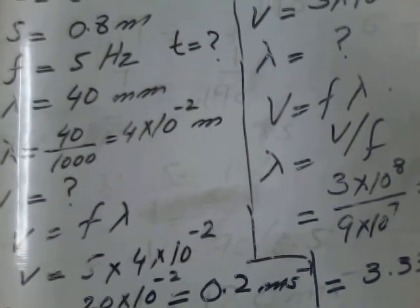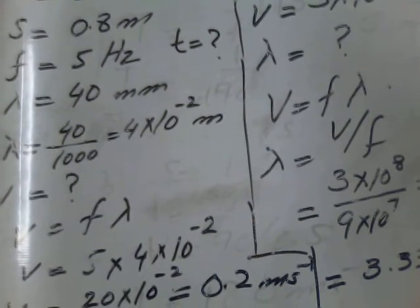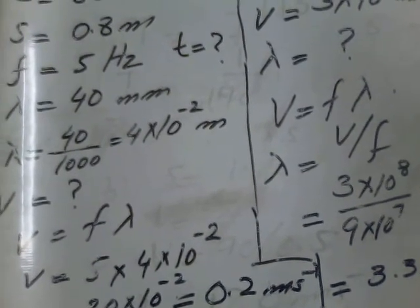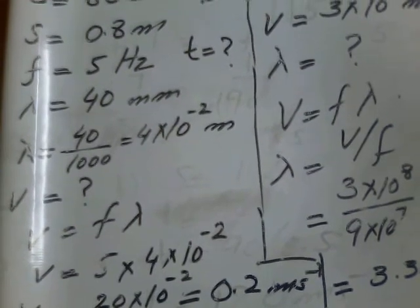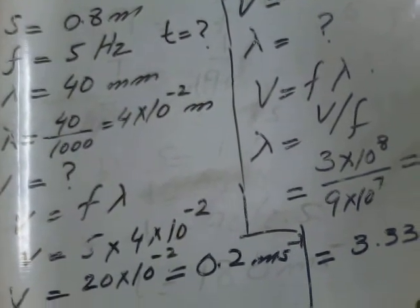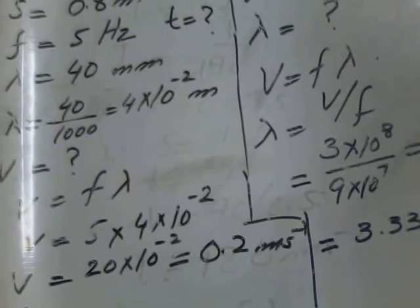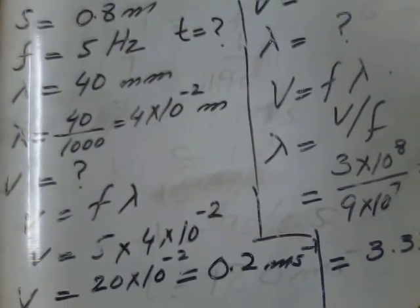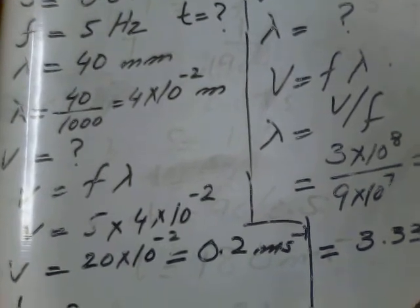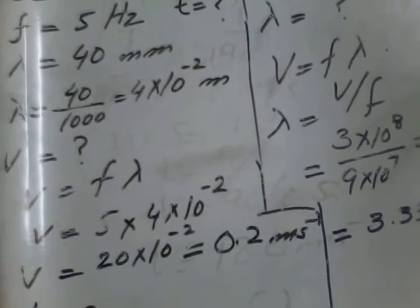The wavelength is given 40 mm. By dividing it by 1000, we convert it into meters. So to find time, first we have to find the speed.